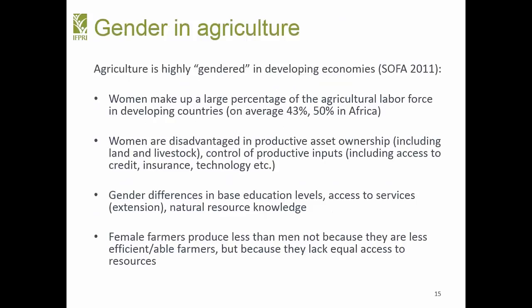A recent FAO report — the State of Food and Agriculture (SOFA 2011) — highlights that agriculture is highly gendered in developing countries. Women make up a large percentage of the agricultural labor force: on average about 43% worldwide in developing countries, and about 50% in Africa. Women are disadvantaged in productive asset ownership and control of productive inputs. There are gender differences in access to education, extension services, and natural resource knowledge. Female farmers produce less than men not because they are less efficient, but because they lack equal access to resources.